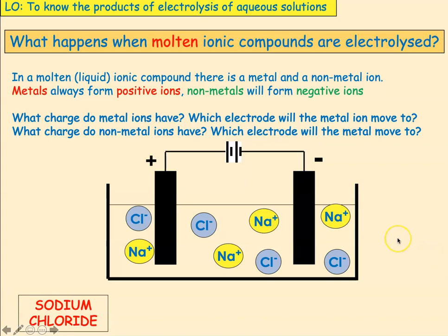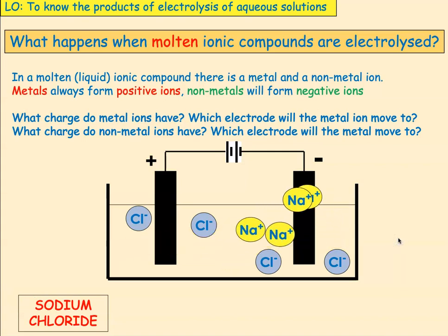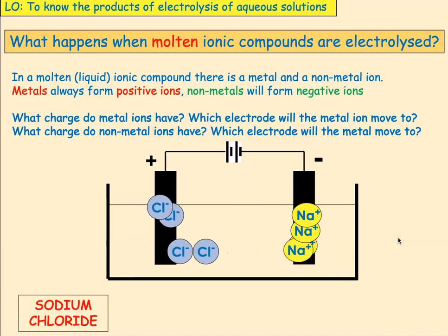Let's think back to what happens when molten ionic compounds are electrolyzed. In a molten liquid ionic compound, when you melt it, there are metal and non-metal ions. The metal ions are always positive and the non-metal ions are always negative. Metal ions have positive charges, so they will move to the negative electrode, the cathode. Non-metal ions have a negative charge, so they will move to the positive electrode.